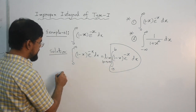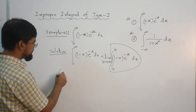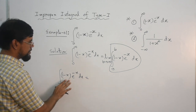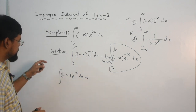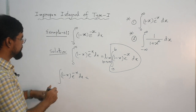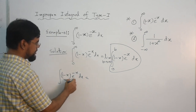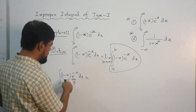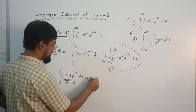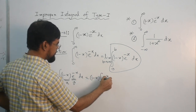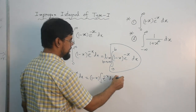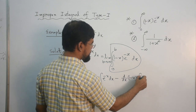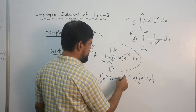First let us evaluate the indefinite integral: the integral of (1 - x)e^(-x) dx. Here I consider u = (1 - x) and v = e^(-x). Therefore, applying integration by parts: u times the integral of v, which is (1 - x) times the integral of e^(-x), minus the derivative of (1 - x) times the integral of e^(-x), whole integrated.